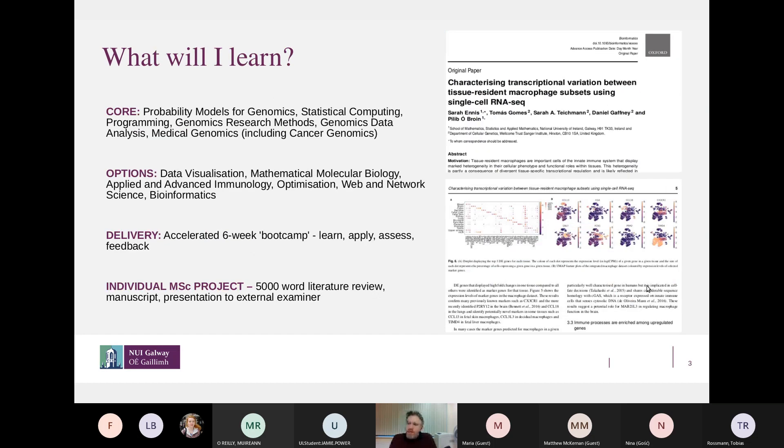In terms of what you learn, we have what we would term core genomics data science skills. So the probability models for genomics, statistical computing and programming, genomics research methods, data analysis and medical genomics, including cancer genomics. So everyone will take a combination of those.